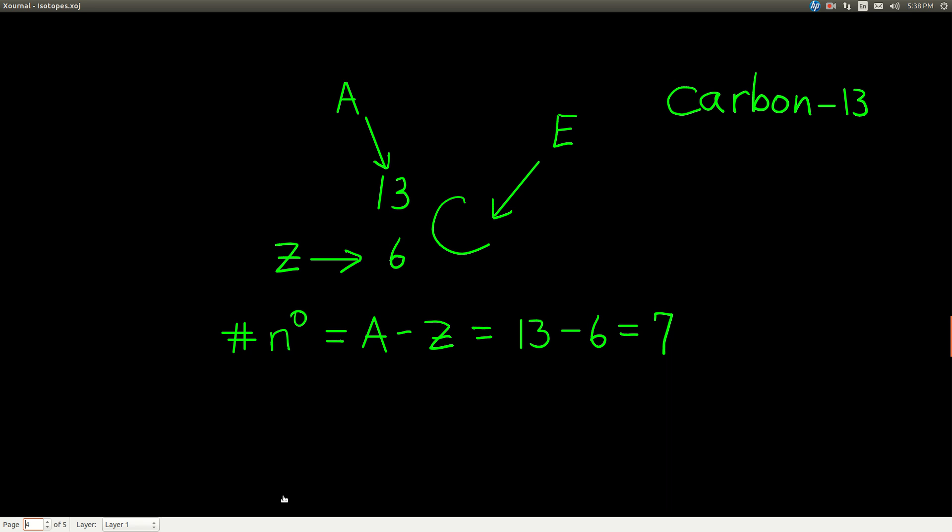For example, this isotope here, this symbol for an isotope, we would call this isotope carbon-13. That's how you say or write the name of an isotope: say the name of its element, and then you say its mass number, carbon-13.